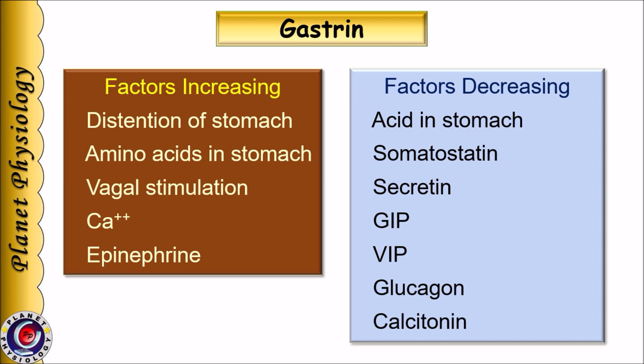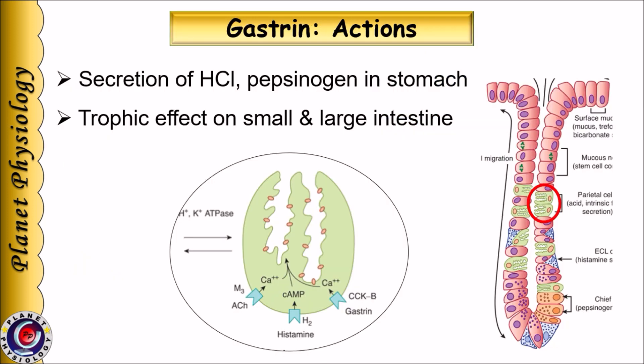Presence of hormones like secretin, GIP, VIP, glucagon, and calcitonin also inhibit gastrin secretion. Since negative feedback also regulates gastrin secretion, its levels are chronically elevated in cases of pernicious anemia, where parietal cells are damaged, leading to decreased or absent acid production. The principal physiological actions of gastrin are secretion of hydrochloric acid and pepsinogen in the stomach, and this action is mediated via CCK-B receptors on parietal cells.